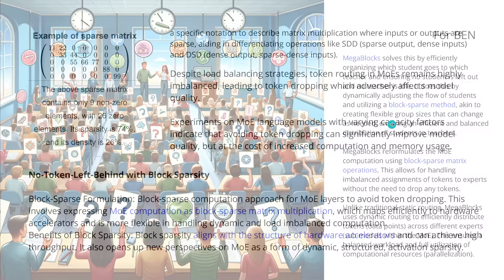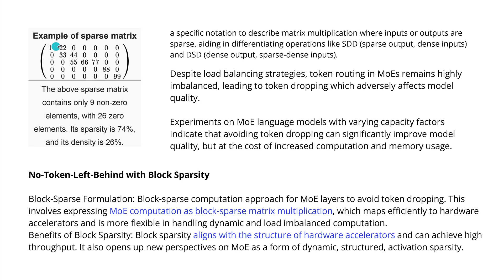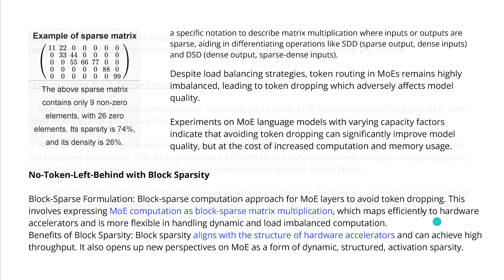What is a sparse matrix? According to Wikipedia, if a matrix has almost only zeros, it is a sparse matrix — for example, only nine non-zero elements versus 26 zero elements. You can calculate the sparsity and density. A block sparse structure is a special type of sparse matrix where non-zero elements are clustered into blocks. This structure is more efficient than a fully sparse matrix when computing matrix multiplication. We apply this block sparse computation for each mixture of expert layer to ensure no token is left behind.